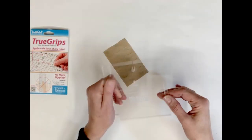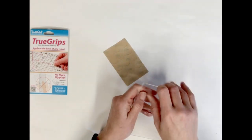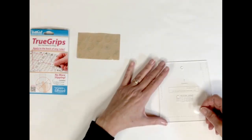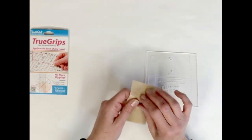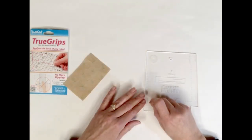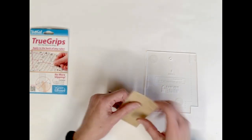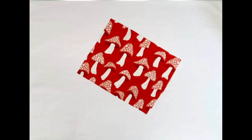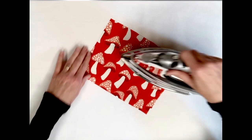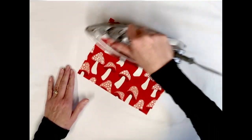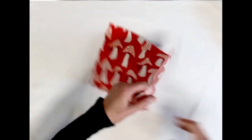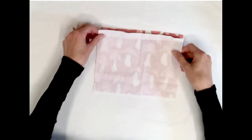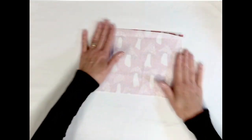Applying adhesive to the wrong side of your fabric before you begin can help make using a rotary cutter and your templates easier. I did this especially with this fabric because it is rayon and much more slippery than quilting weight cotton.